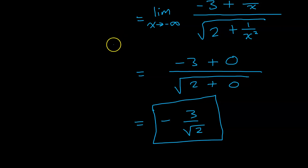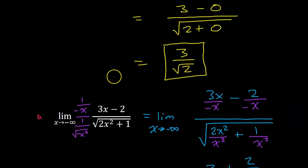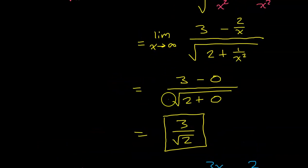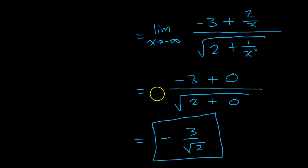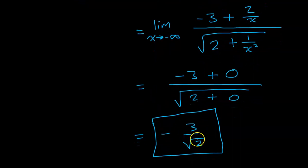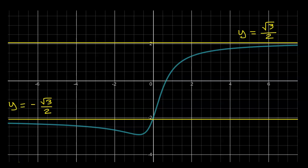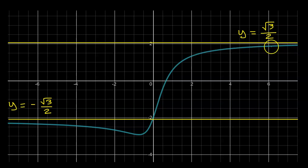Let's take a quick look at the actual graph of the function. Keep in mind that 3 over the square root of 2 is about 2.1. We see that this function has two horizontal asymptotes — one on the right and one on the left. As x approaches positive infinity, the function approaches positive 3 over the square root of 2. But as x approaches negative infinity, the function gets closer and closer to negative 3 over the square root of 2.